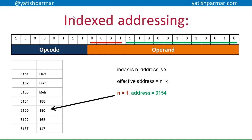The index value of 1 is stored in the index register. A branching instruction is used to jump out, and the flow control uses a branch instruction to call the instructions for processing that data item. Then the index register increments, the branch instruction is called again to call those same instructions for the next memory element along, and the index register keeps incrementing while looping to repeat those instructions and process each of the data items in the block.